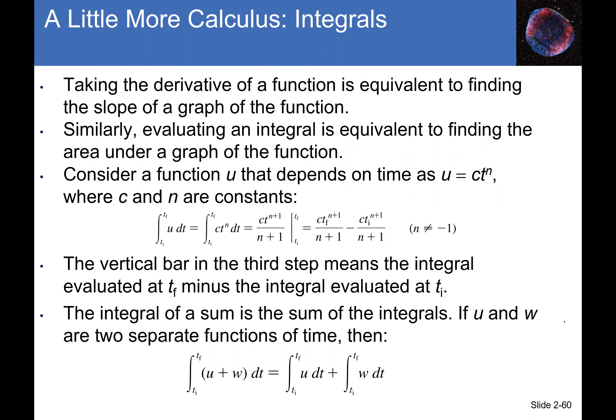Some other things we can have involve integrals. The area under a velocity vs. time graph gives displacement — you can integrate to find that. Similarly, the area under an acceleration vs. time graph gives velocity. These are the integration rules: if u(t) = c·tⁿ, then ∫u dt = c·t^(n+1) / (n+1). This is the anti-derivative — instead of subtracting the exponent you add one.